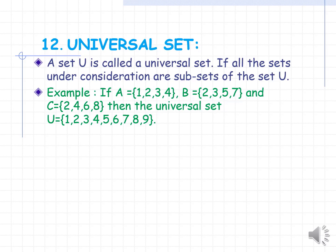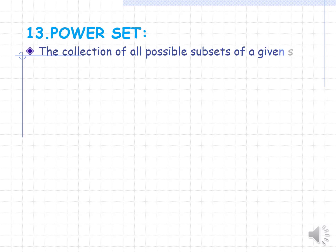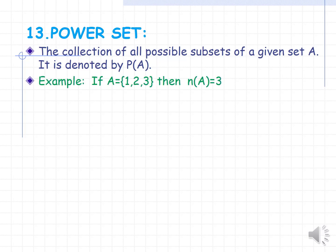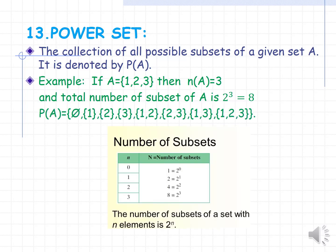So U = {1, 2, 3, 4, 5, 6, 7, 8}. Power set. The collection of all possible subsets of a given set A is called a power set, denoted by P(A). For example, if A = {1, 2, 3}, the number of elements of A is 3, and the total number of subsets of A is 2³ = 8. Therefore, the power set of A is the collection of all 8 subsets.